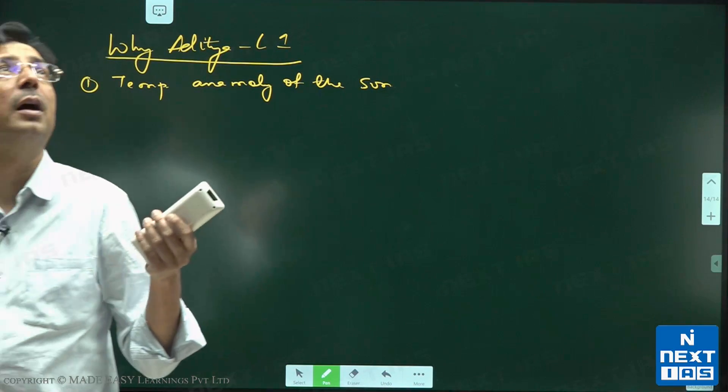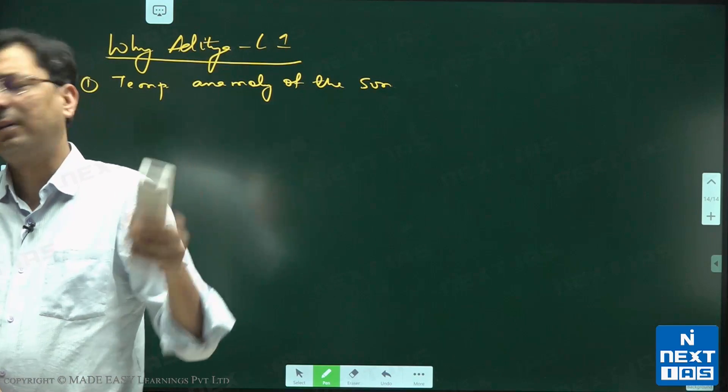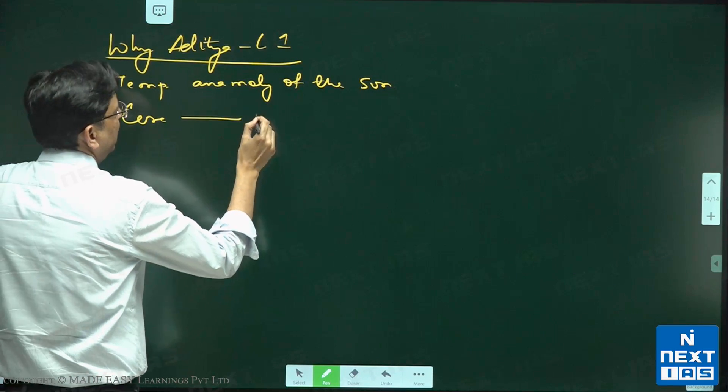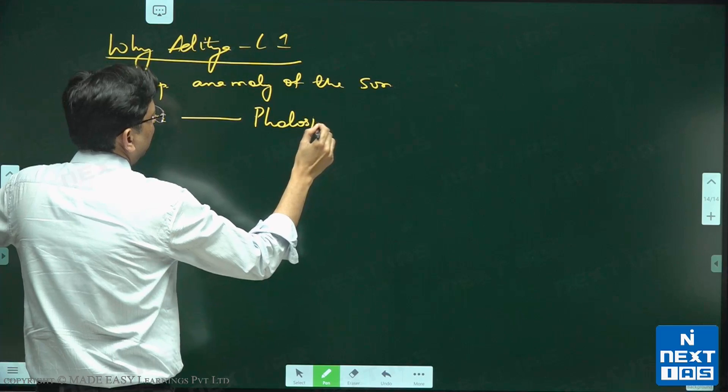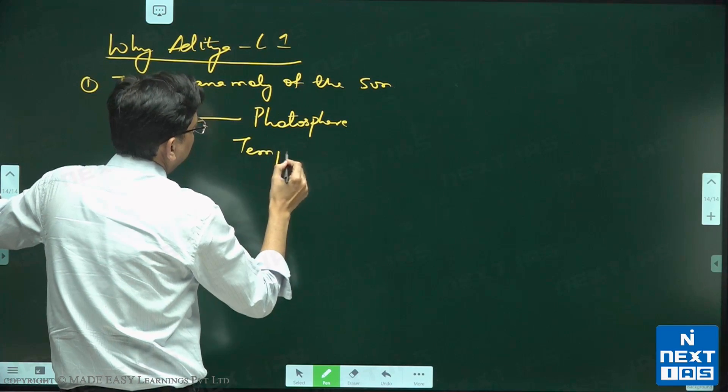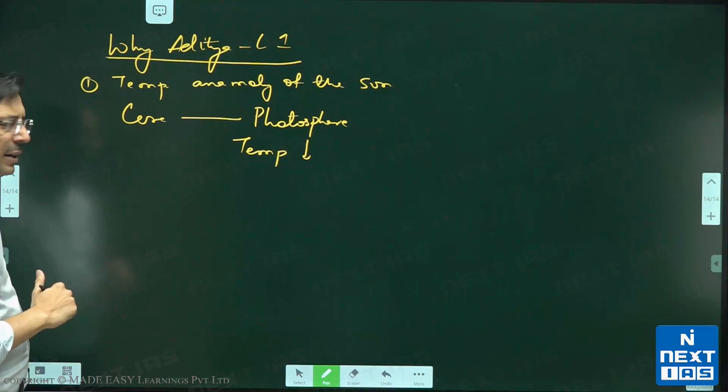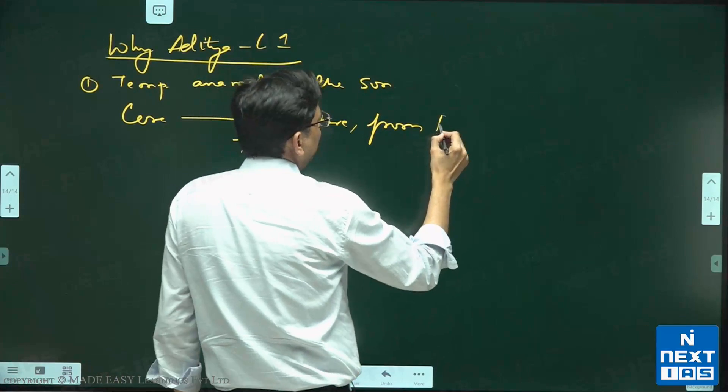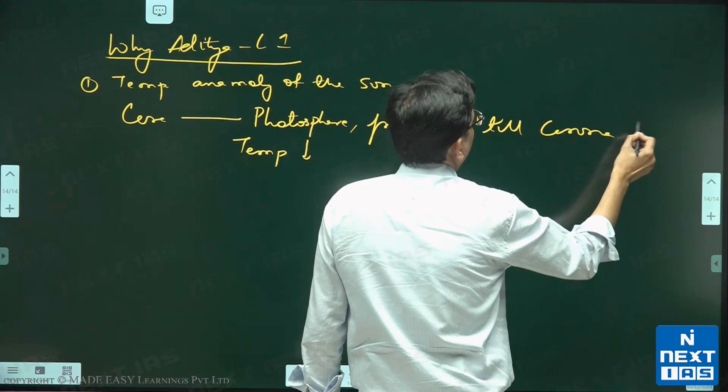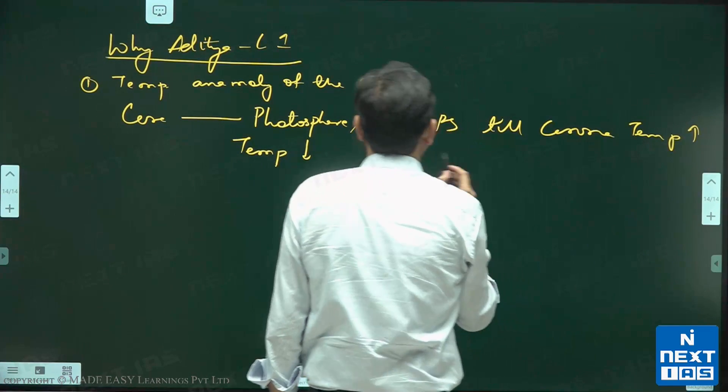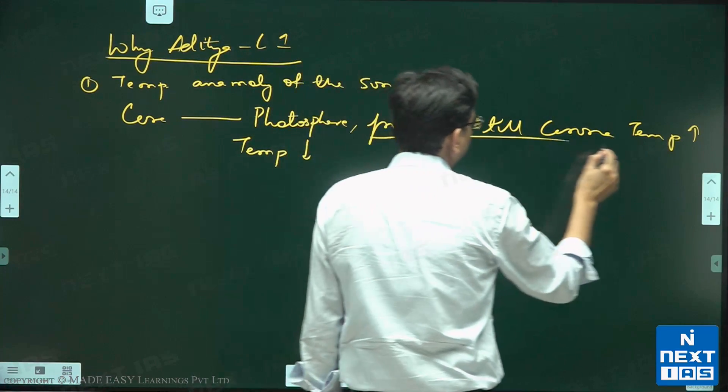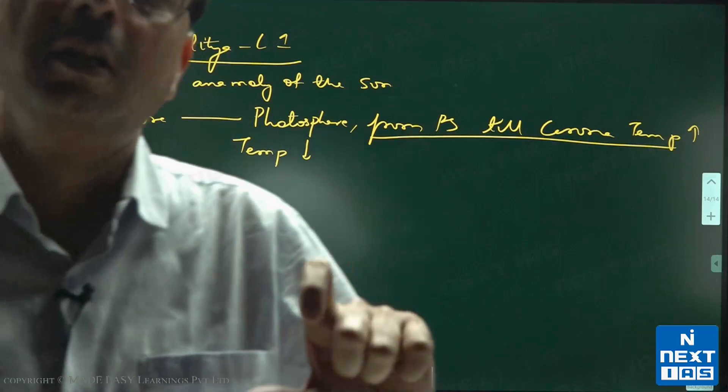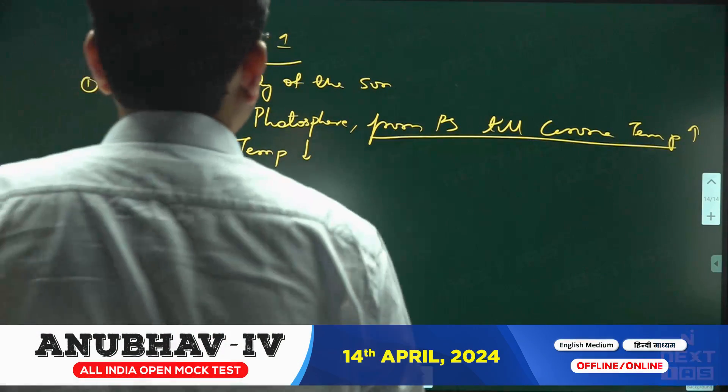But from photosphere till corona, temperature increases. This is temperature anomaly. Temperature is still highest in core, which is 15 million degrees Celsius. But by the time we reach corona...